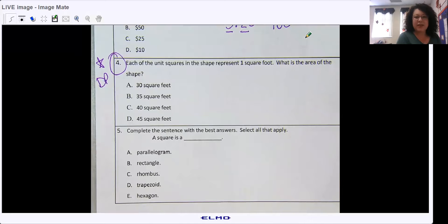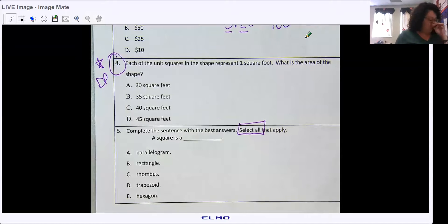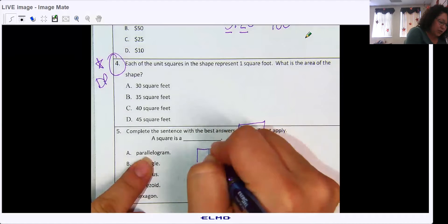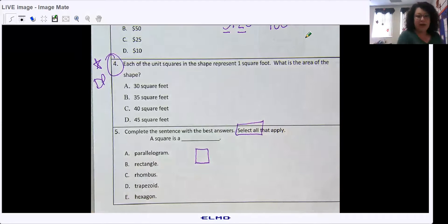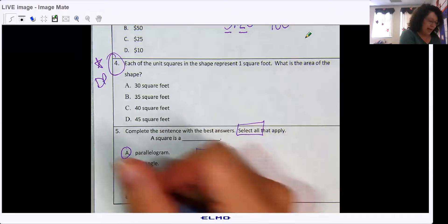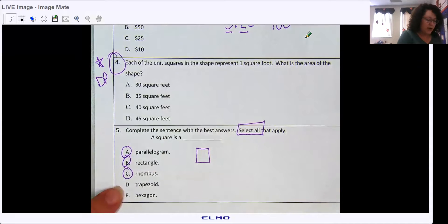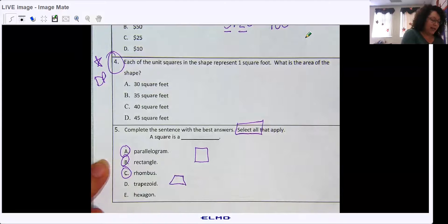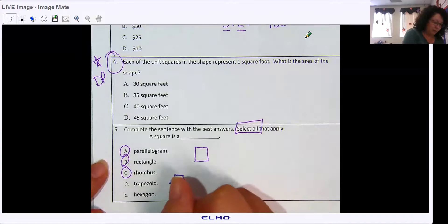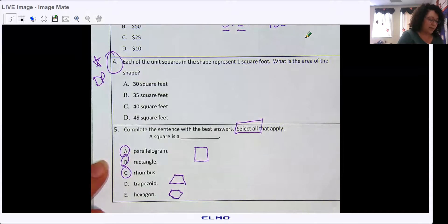All right, number five, complete the sentence with the best answers. Select, oh, we haven't seen one of those in a while. So that means more than one, right? Okay. A square is a parallelogram. Does a square have two sides that are parallel? Yes. Can a square be a rectangle? Yes. Is a square a rhombus? Yes. Is it a trapezoid? Nope. Is it a hexagon? Nope, because hexagons have six sides.